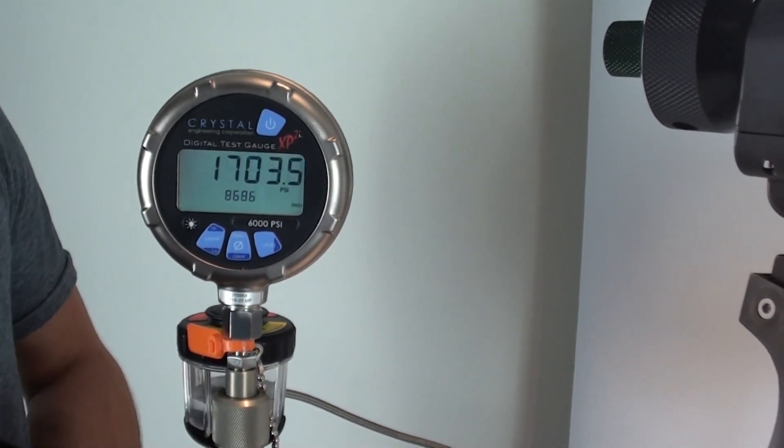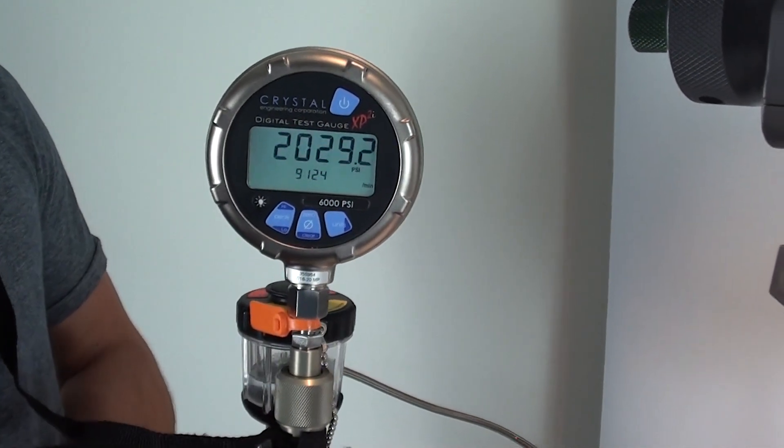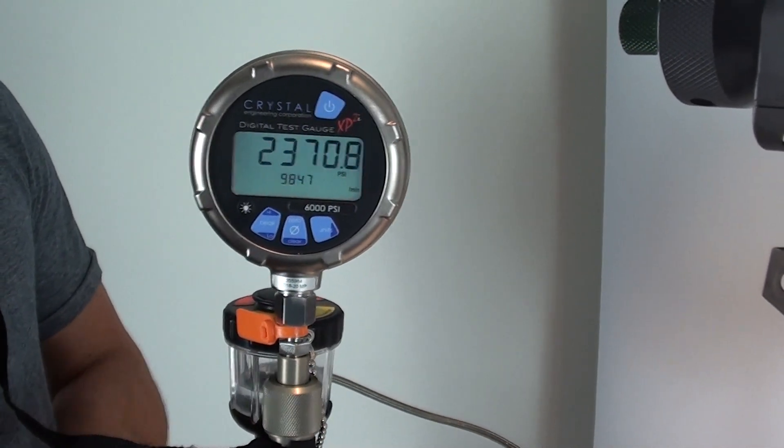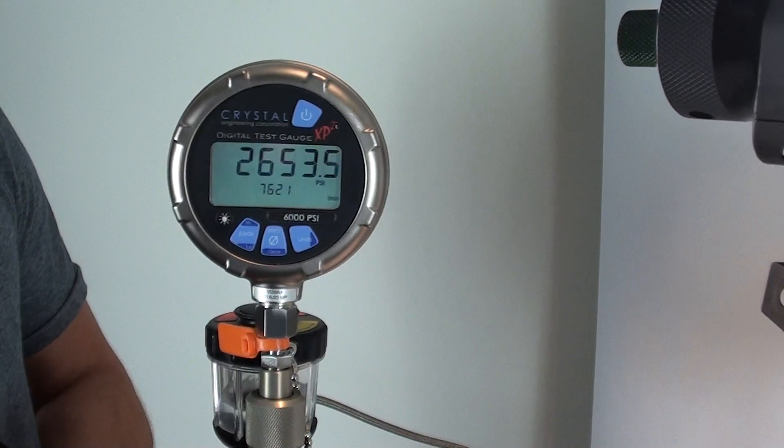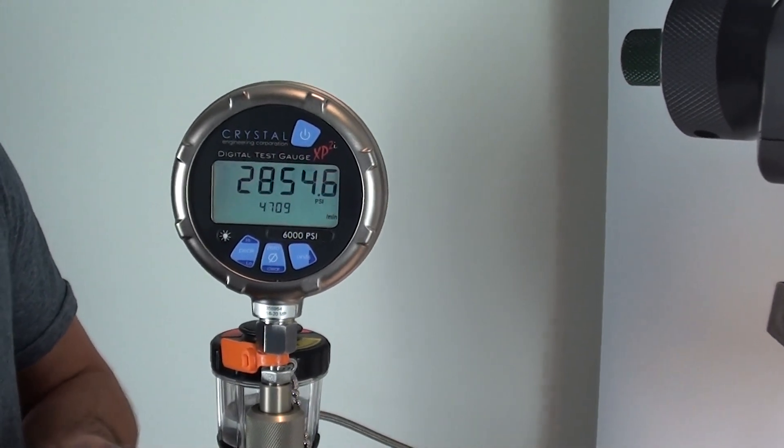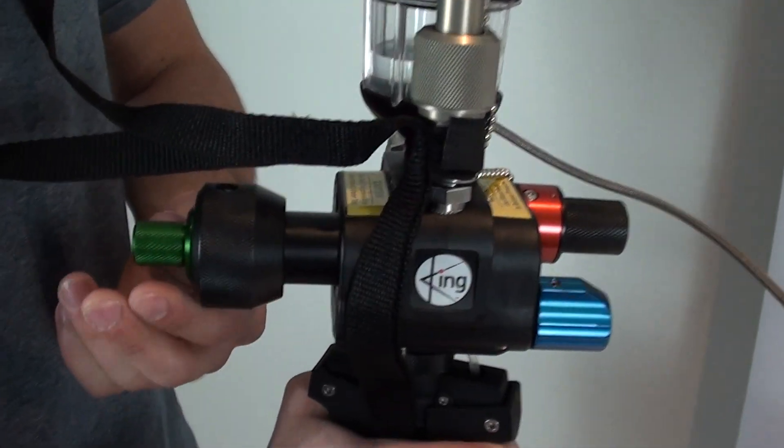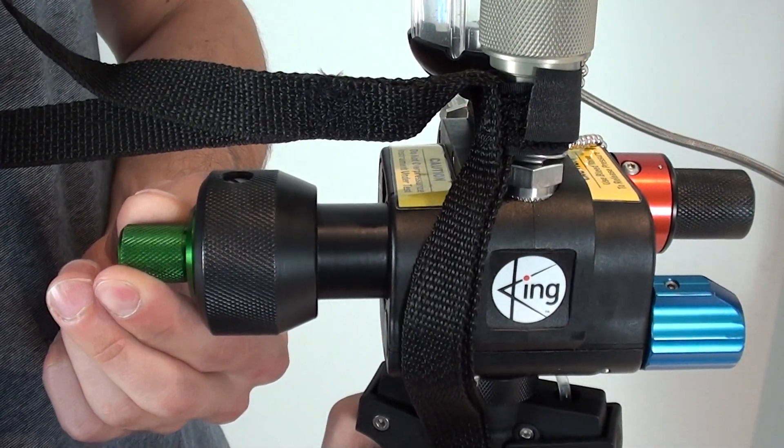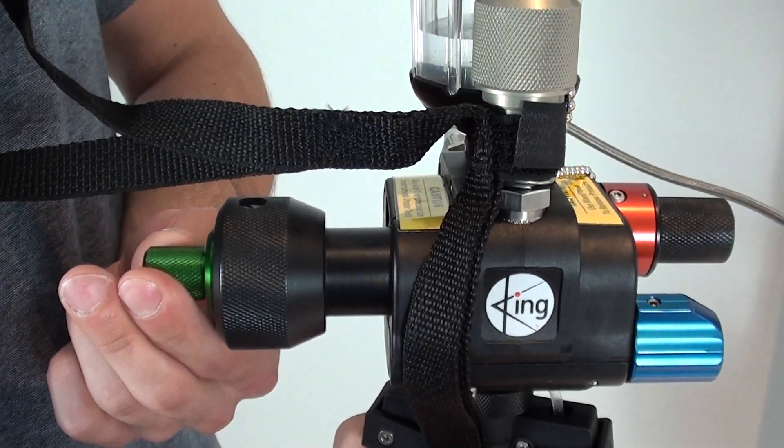So for the purposes of this test, we're going to go to about 3000 psi. As we get closer to 3000, what we're going to do is switch from using the coarse knob, which is the black knob, to the fine adjustment using the green knob.